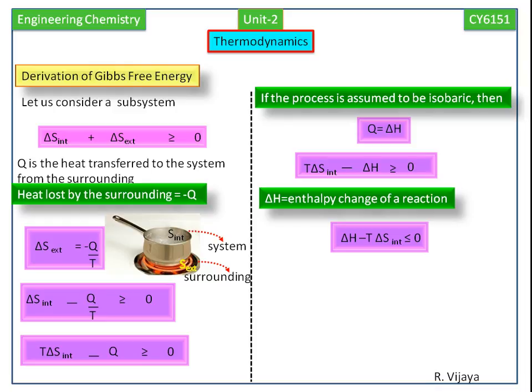Gibbs free energy is the energy associated with a chemical reaction that can be used to do work. Delta G equals delta H minus T delta S.